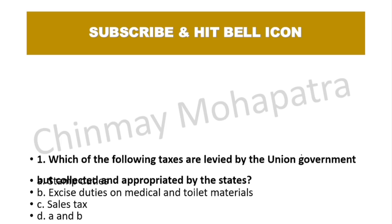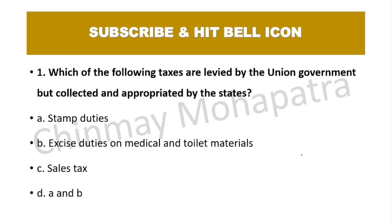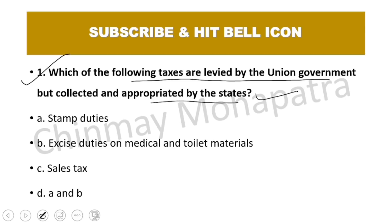Question number 1: Which of the following taxes are levied by the union government but collected and appropriated by the states? The right answer is option D — A and B — stamp duties and excise duties on medical and toilet material.